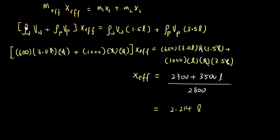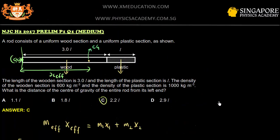Subsequently, you just sub the number inside. Density of wood is 600. Volume is what? Volume is length times cross-sectional area of the rod. Density is 1,000. For the plastic, volume is the length, which is L, times the cross-sectional area. Then X-effective. So this one, the rest, you dump in the same number. You can get the X-effective is 2.214. The answer is C.